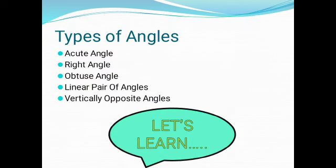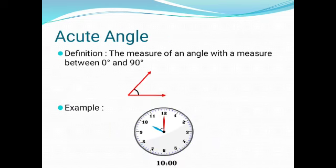There are different types of angles. Let us learn them. Acute Angle: An angle which measures between 0 to 90 degrees is called an acute angle.